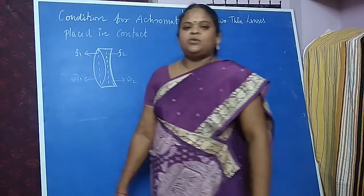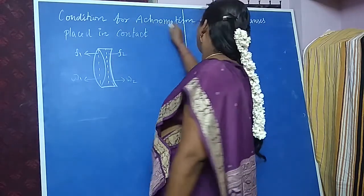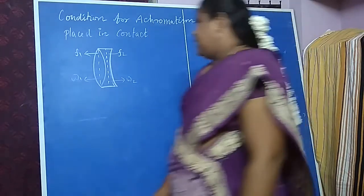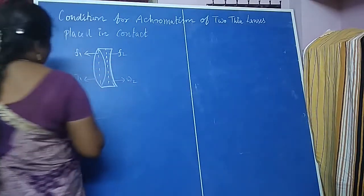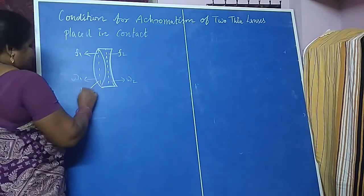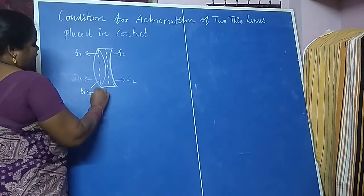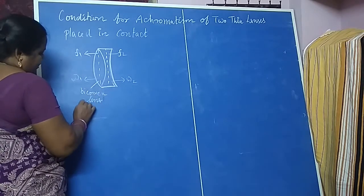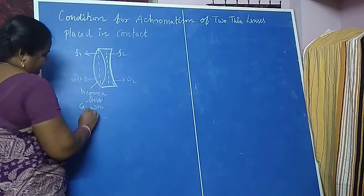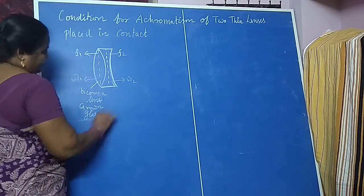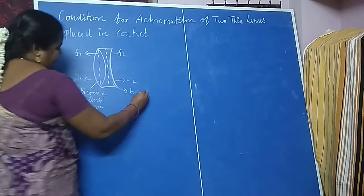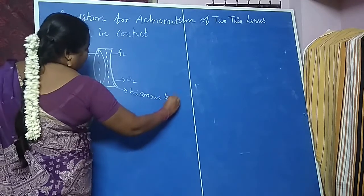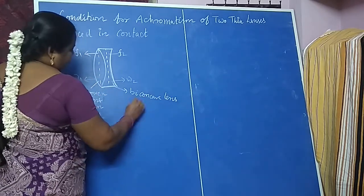In this video, I am going to discuss the condition for achromatism of two thin lenses placed in contact. Here we have two thin lenses: one is a bi-convex lens made of crown glass, and the other is a bi-concave lens made of flint glass.